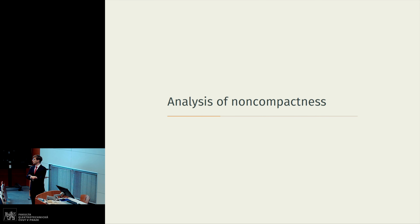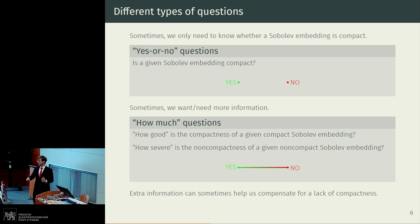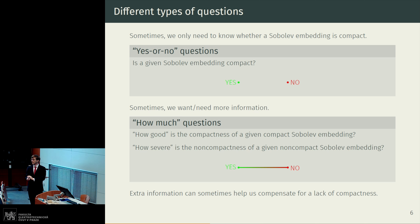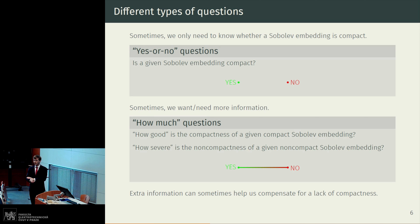That brings me to the topic I would like to talk about in more detail and show you some results from my research: analysis of non-compactness. There are different types of questions being studied with respect to compactness of Sobolev embeddings. So far, we have seen sort of yes-or-no questions, whether a given Sobolev embedding was or was not compact. However, sometimes we need more information. For example, if we have a non-compact Sobolev embedding, we might need to know how much, in a sense, this embedding is non-compact. Because if we have enough extra information about the structure of non-compactness, it can sometimes help us get around this obstacle.